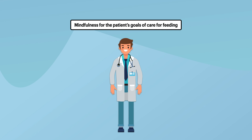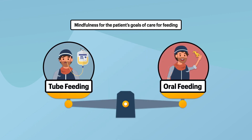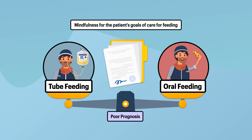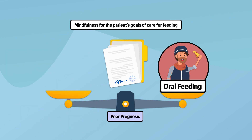Finally, the third concept concerns goals of care for feeding. When balancing tube feeding and oral feeding, you should do whatever you can to learn the patient's goals for artificial nutrition and hydration, which may be outlined in their advanced directives. For example, if a patient has an overall poor prognosis and is approaching the end of their life, they may not want a drawn-out process of monitoring and assessing their oral intake. They may just want the feeding tube removed and eat whatever they can without worrying about whether they're eating enough.